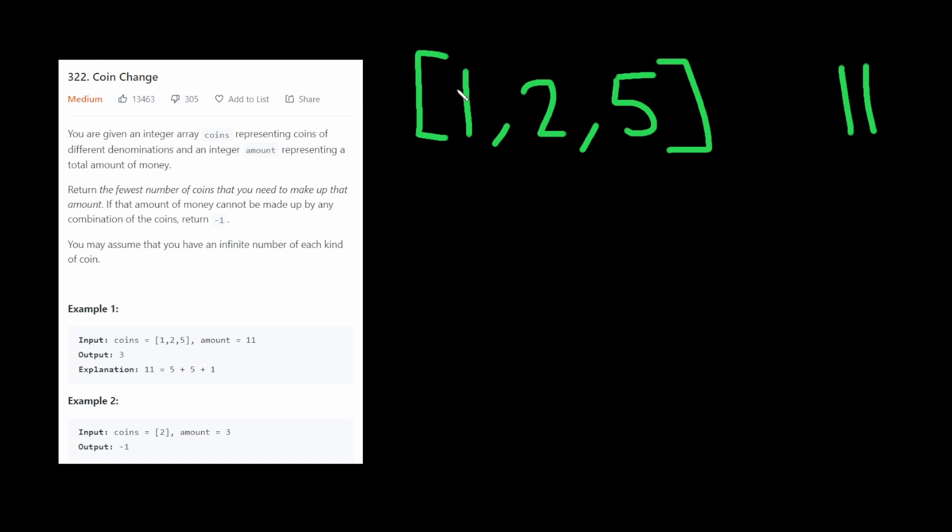So what do I mean by that? So we're actually going to loop through each number all the way up until 11. So we want to have a data structure where each key represents an amount like 1, 2, 3, 4, 5, all the way up until 11. And each value represents the fewest number of coins needed to make up that amount. We start out with 1. The fewest number of coins needed to make 1 is just 1, because we can make that with this coin here.